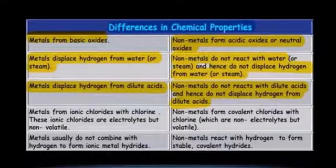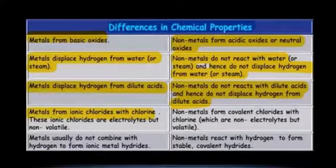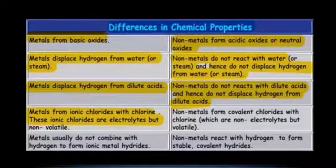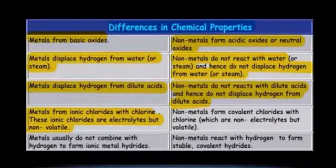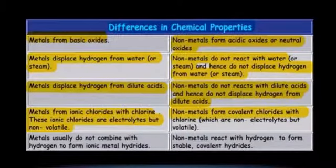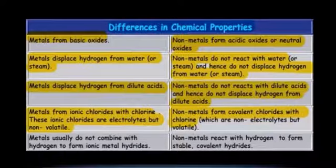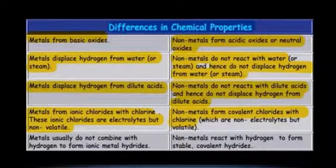Fourth property: metals form ionic chlorides with chlorine gas. These ionic chlorides are electrolytes, meaning they can conduct electricity, and they are non-volatile. Non-metals, on the other hand, form covalent chlorides with chlorine, which are non-electrolytes but are volatile.